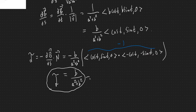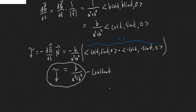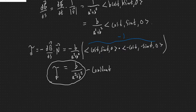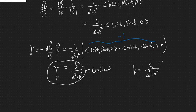Some things to notice: torsion τ = b/(a²+b²) is a constant. Recall that for the circle, the unit binormal vector was constant, so its derivative was zero — that's why the circle had zero torsion. The helix, on the other hand, has constant torsion, so it's twisting out of the osculating plane at a constant rate. And recall that curvature κ = a/(a²+b²) is also a constant. So helixes have both constant curvature and constant torsion — they turn and twist out of the osculating plane at constant rates.